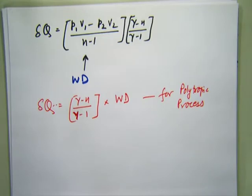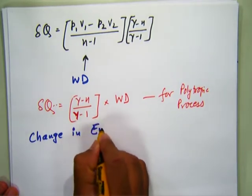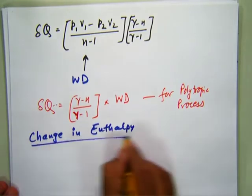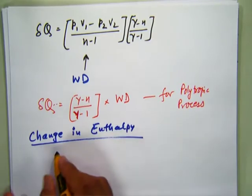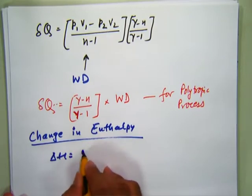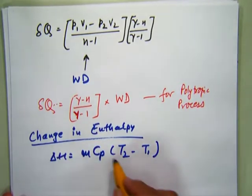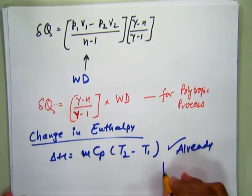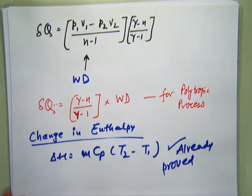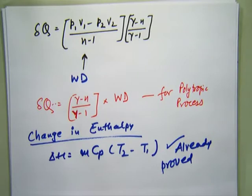The next is change in enthalpy. Change in enthalpy: delta H = m·Cp·(T2 - T1), which we have already proved in our earlier processes.